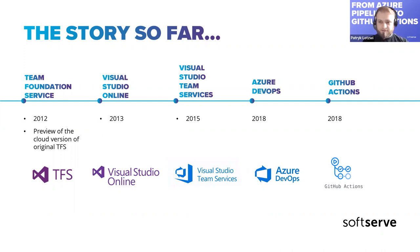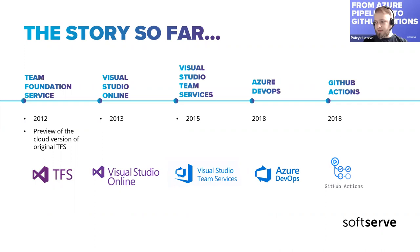They renamed the platform but the features remained mostly the same. Then in 2015, they renamed it one more time and also refreshed the UI and added some more features. The platform was starting to look like what we can see today as Azure DevOps. Three years later, they renamed it one more time and it became Azure DevOps in the form we know it today.